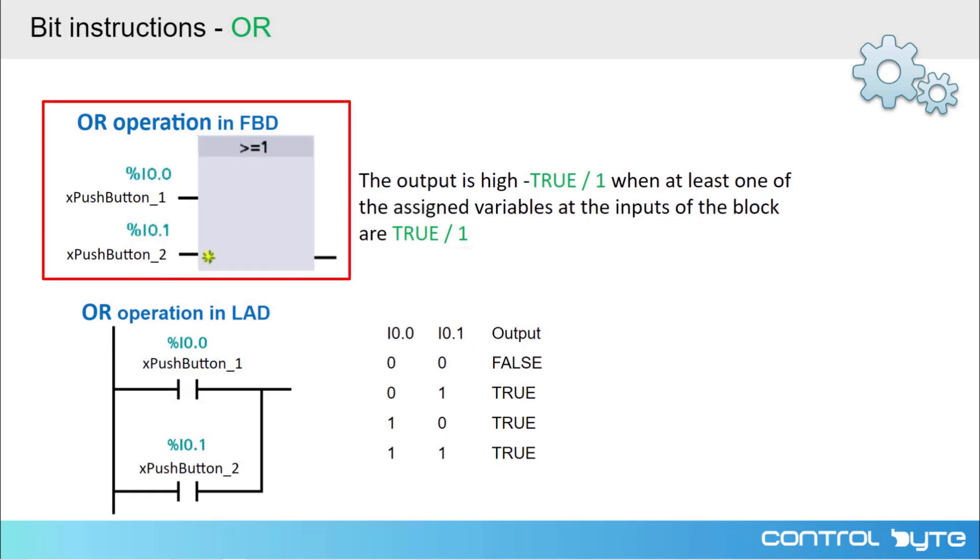Okay, let's move on to the OR statement. The ladder OR instruction is obtained by placing one contact parallel to another. In FBD language, we have a ready-made block marked with a greater than or equal sign. Let's check the TRUTH table. The output is set high when at least one of operands goes high.